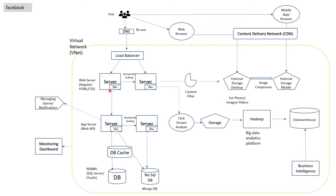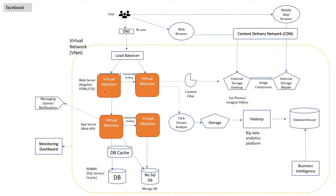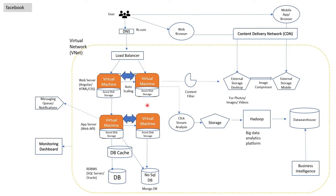The servers will be replaced by virtual machines assigned by the Azure cloud. Then the disk storage is replaced by Azure disk storage for caching and processing frequently requested data. These have a limited size. In Azure you have a feature called auto scaling, which will automatically increase and decrease the number of VMs based on website traffic. This is a very important feature — in normal scenarios you have to add servers manually, but here due to auto scaling it is automatic and saves a lot of work.